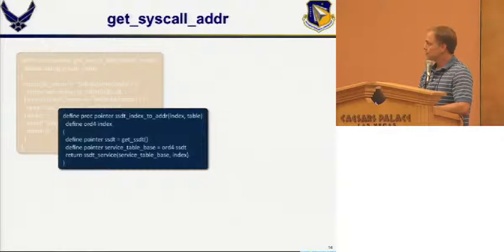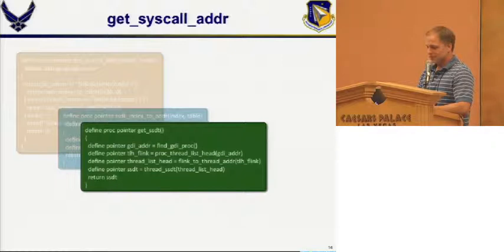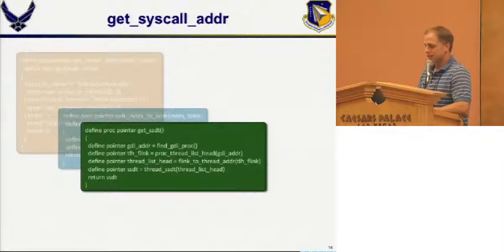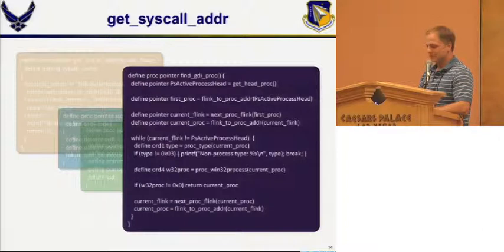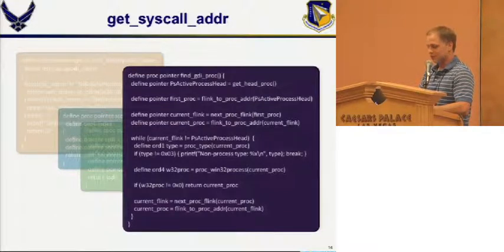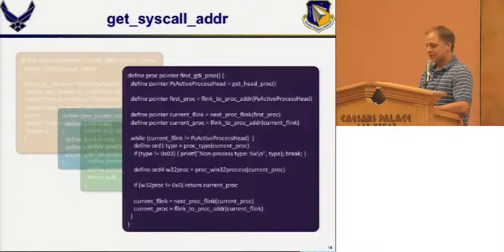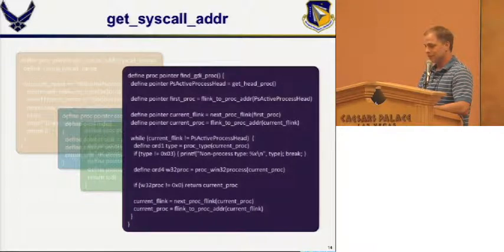Where do we actually get the address of the SSDT? This is where it gets more interesting, and I was digging through the source code to Volatility, a Python framework for forensics. With the Arium, you don't have exported symbols because you're not running inside the operating system. So I'm looking for a Windows GDI process and pulling the pointer to the SSDT out of its e-thread structure. Finding the GDI process is the biggest pain — you have to find the head of the process list by looking for the KPCR structure, which is always at a known location in XP, and from there get the head of the active process list and walk through it, checking each process's Win32 process field value to identify the GDI process.